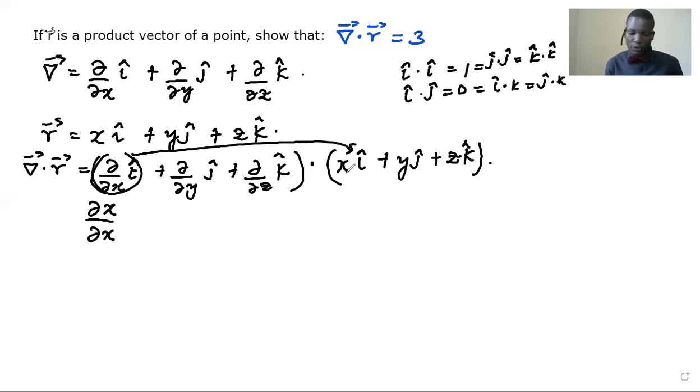So once we dot that with that, we get zero because i dot j is going to be zero. So we just go on to the second and then we get that, and third, we get that.